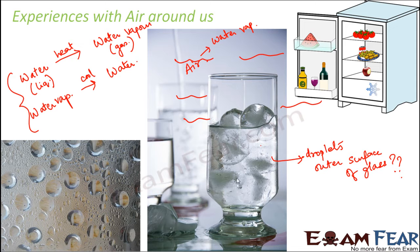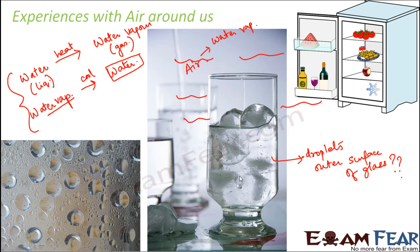When we suddenly place a chilled glass on the table, that glass is very cold — it has a very low temperature. Such a cold glass will start cooling the air around it. So the nearby air gets cooled down, and therefore the nearby water vapor present in the air also gets cooled down. When water vapor is cooled down, it gets converted to liquid water, which then gets deposited on the surface of the glass.